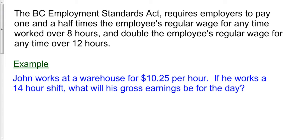So we have John working over 12 hours, so we know he's going to get some double time. So here's how this works. For the first eight hours, John is just going to earn $10.25 an hour.